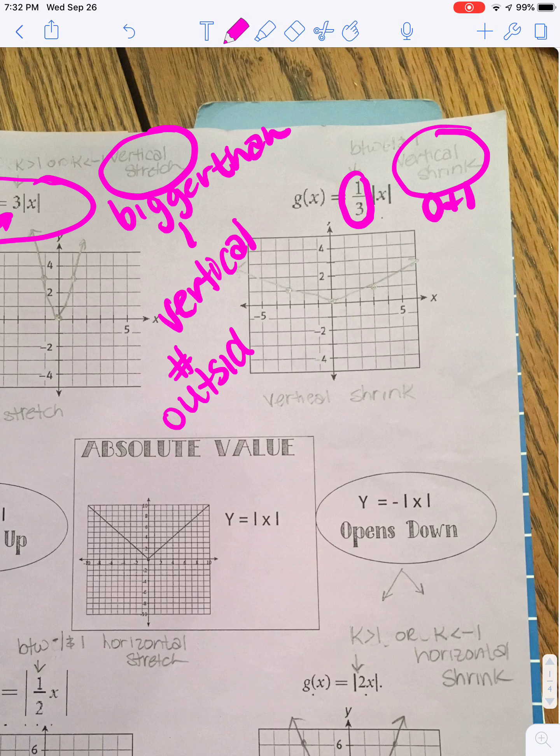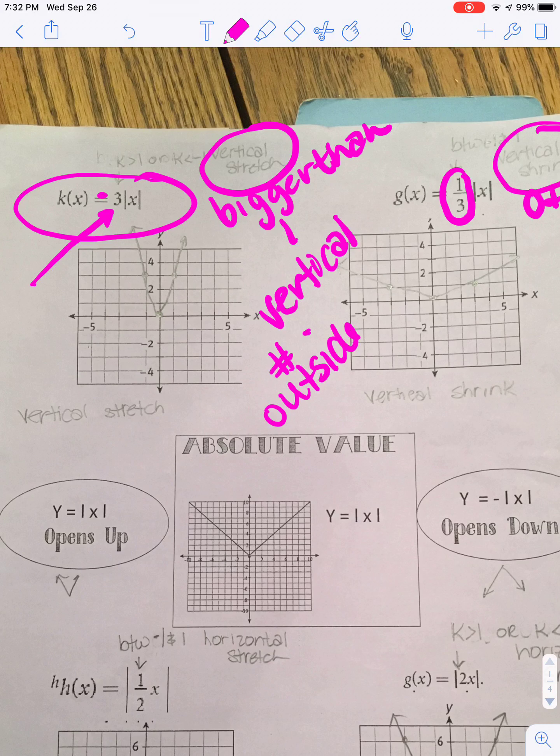Now remember, I could possibly have a negative 3x, or a negative 3 absolute value of x. The only difference with that one would be it would open down. It would still be a vertical stretch, and it would still look like this. It would just look exactly like its mirror image, so it would open this way.